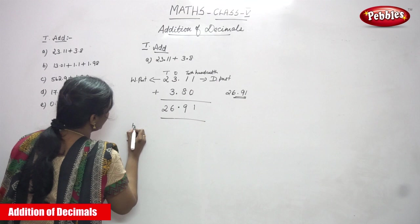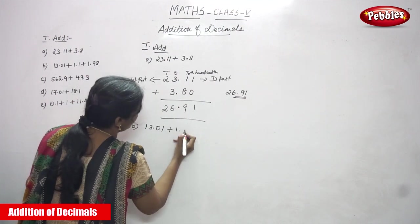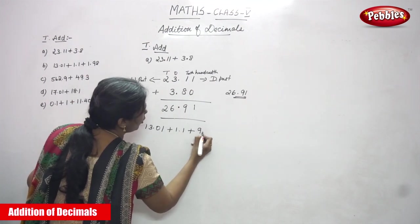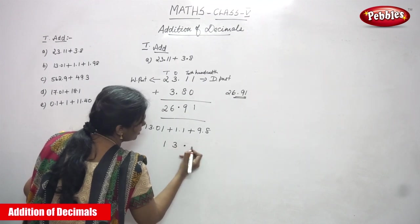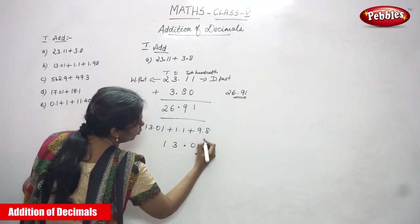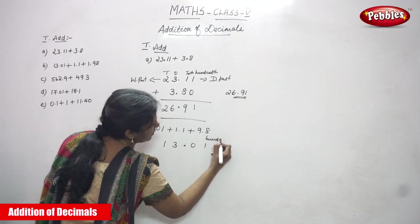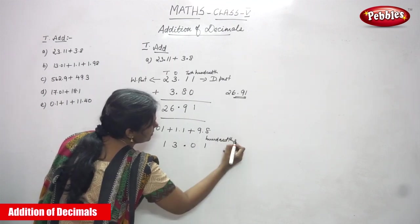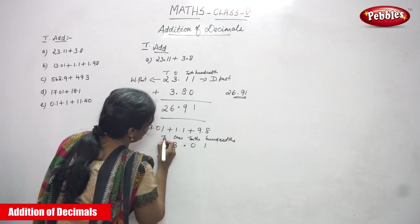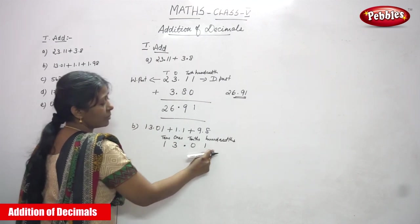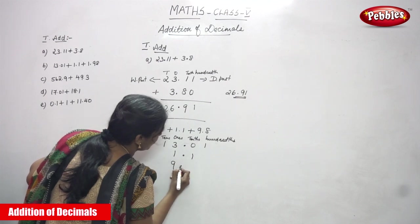The next question is B. That is 13.01 plus 1.1 plus 9.8. So for this number, first you have to write 13.01. This is the hundredths place — H-U-N-D-R-E-D-T-H. This is the tenths place, and this is the ones place, and this is the tens place. This is the whole part. After the decimal it is the decimal part. So you have to write 1.1, then 9.8.